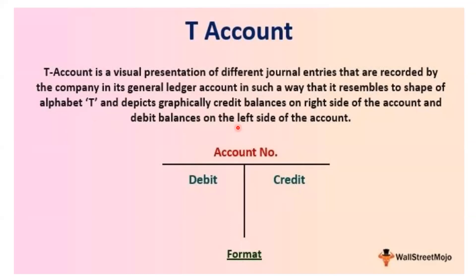The format of the ledger account: account number, then horizontal line and vertical line forming the T. Left side starts with Debit, right side starts with Credit. This format is what you should write for two marks in your exam. Accountancy is a very high-scoring subject — you just need to concentrate and practice daily. Take it as a pleasure, not a pain, and you will get very good marks.